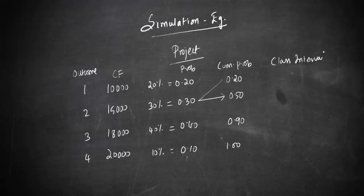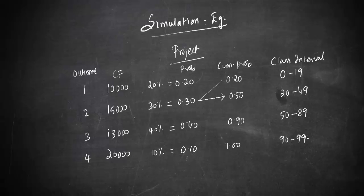Next, you develop what are known as random class intervals. The class interval is based on the cumulative probability. Since the first cumulative probability is 0.20, the first class interval is 0 to 19. The next cumulative probability is 0.50, so the class interval is 20 to 49. The third class interval is 50 to 89, and the fourth is 90 to 99.